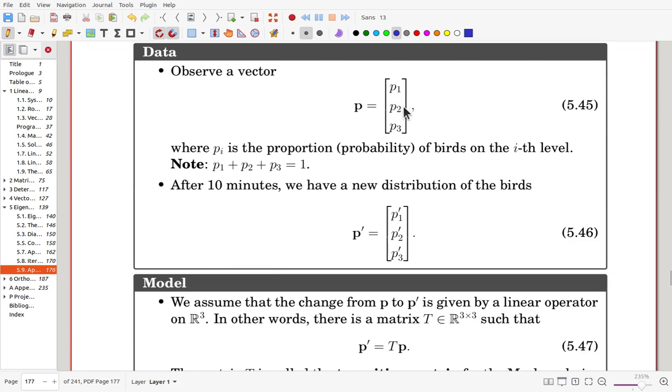And observe a vector P, P1, P2, P3. Here pi is the proportion of birds on the ith level. So these are probabilities. So they must be non-negative and the sum must be 1.